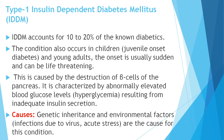The causes of Type 1 diabetes can be genetic inheritance, transmitted from parents to children, or environmental factors such as infection due to virus or acute stress.